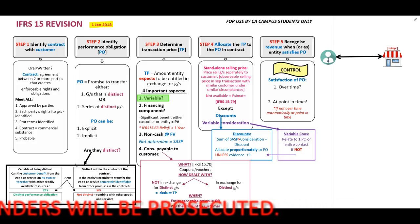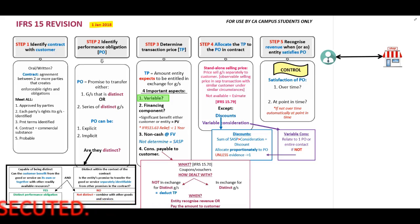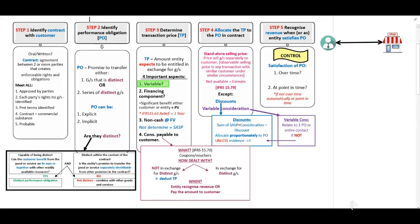The standard indicates we will use a five-step model, and this five-step model will provide us with guidance on how to allocate and recognize our revenue. The five-step model applies to all contracts with customers. The purpose of this recording is to provide a revision on the five-step model in terms of IFRS 15. First, we will work through the five steps briefly and then move on to the details relating to each step.